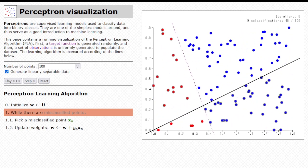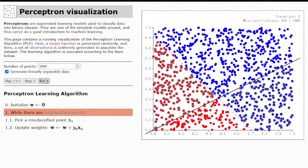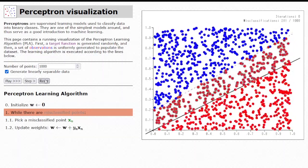You can also change the number of points. Let's put, let's put a thousand here. There are many more points, right?